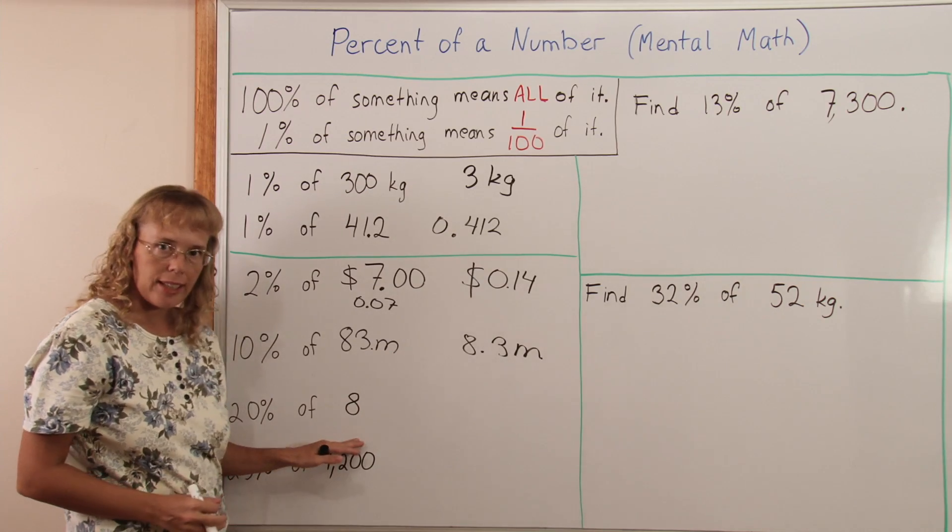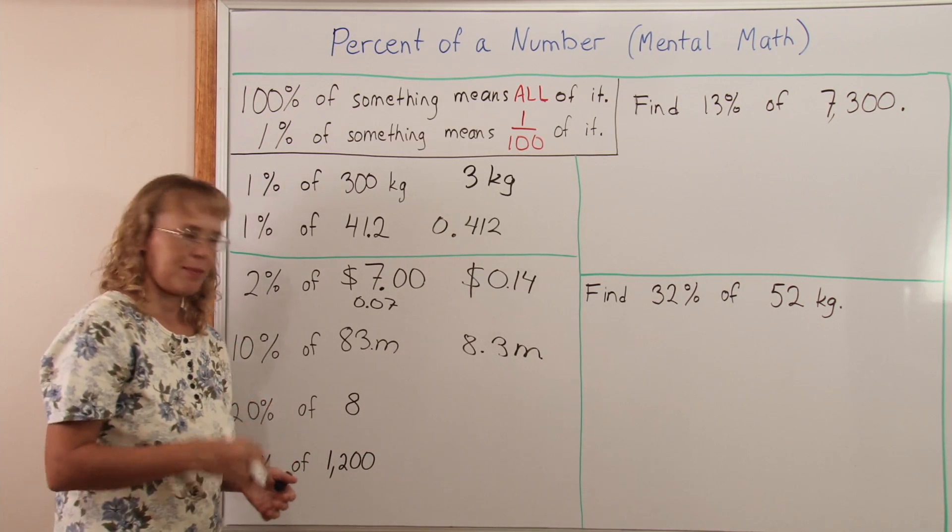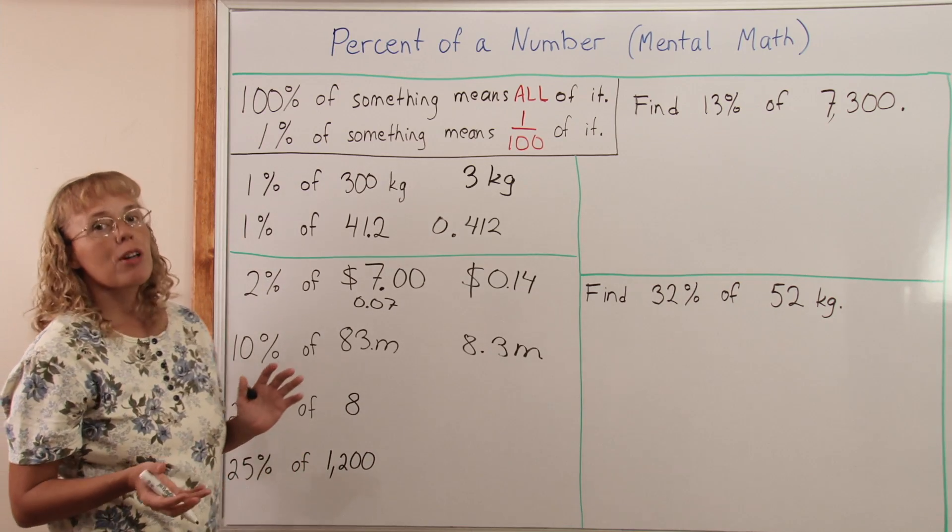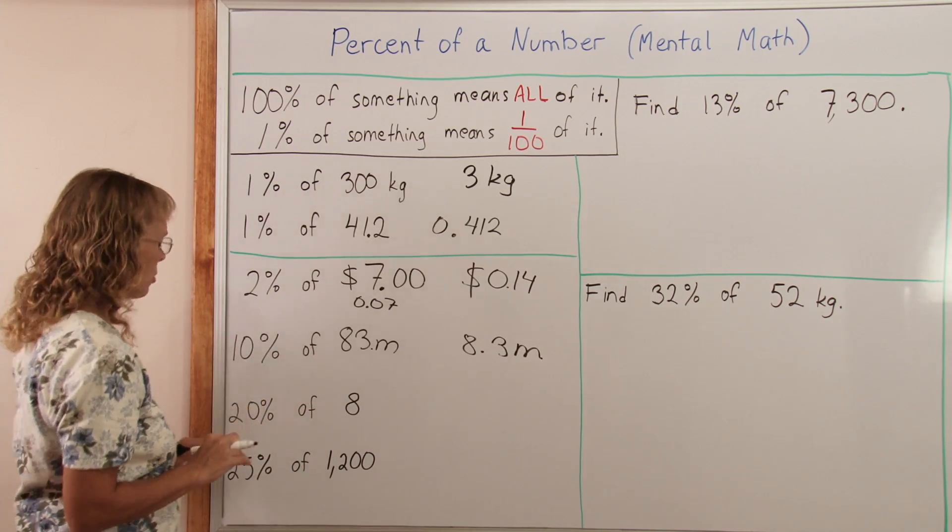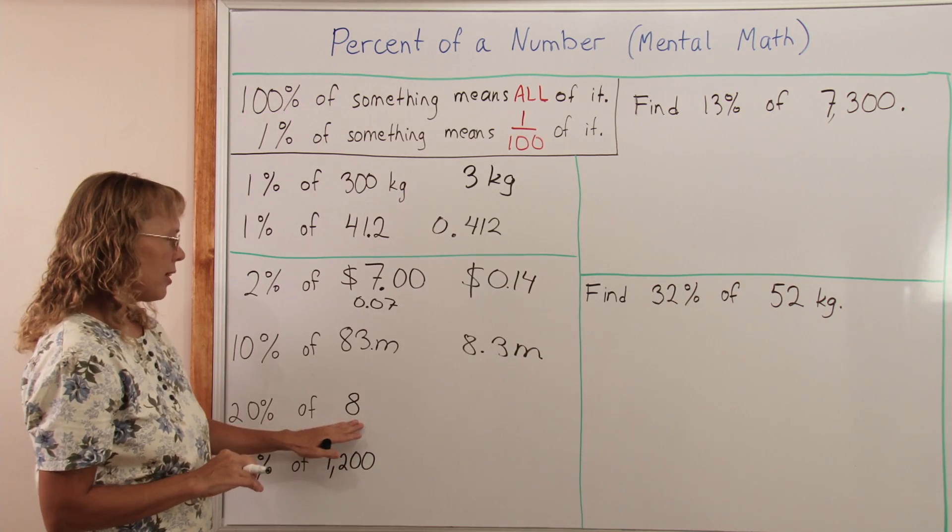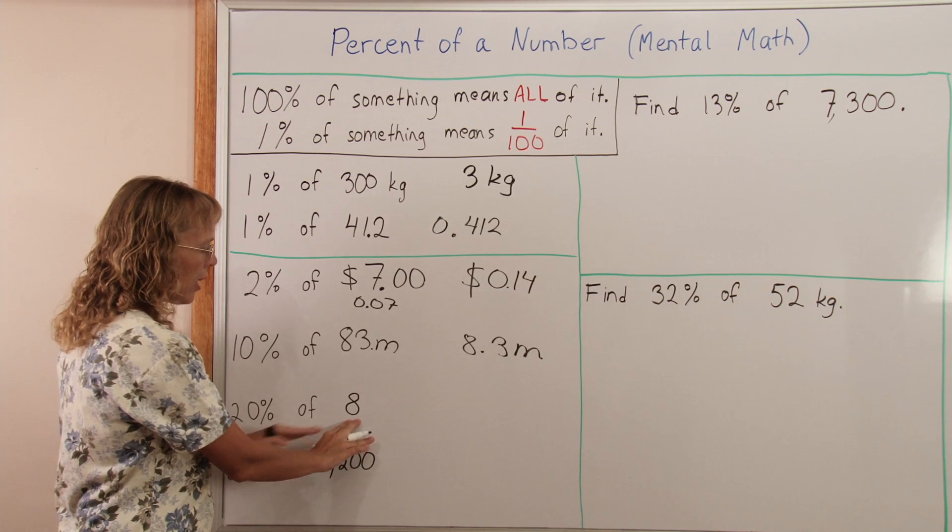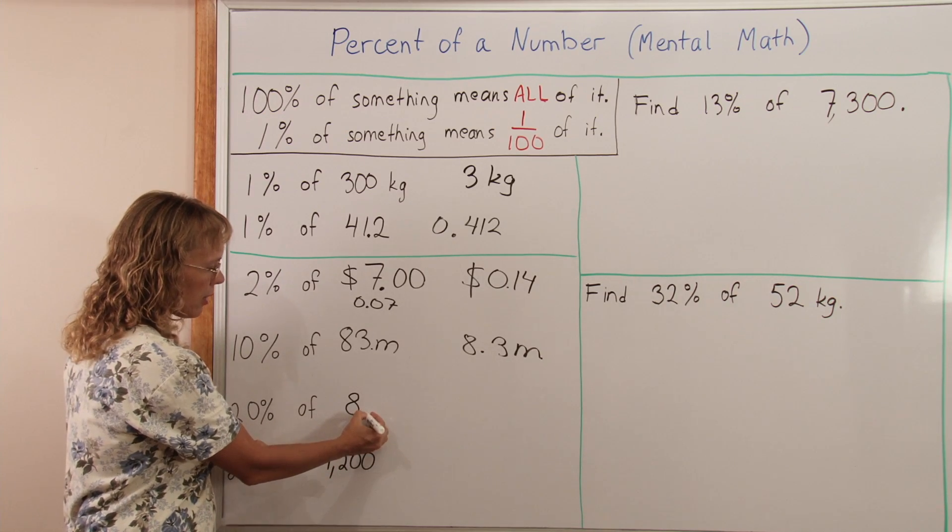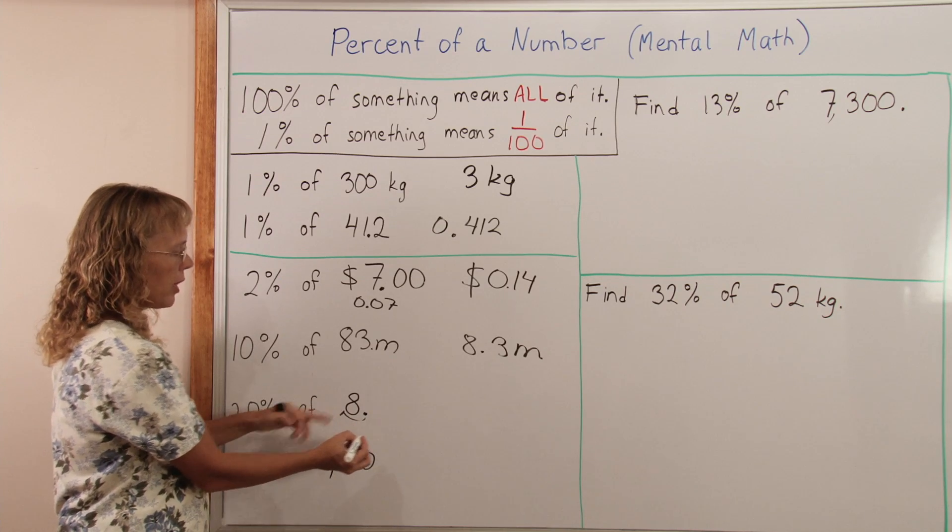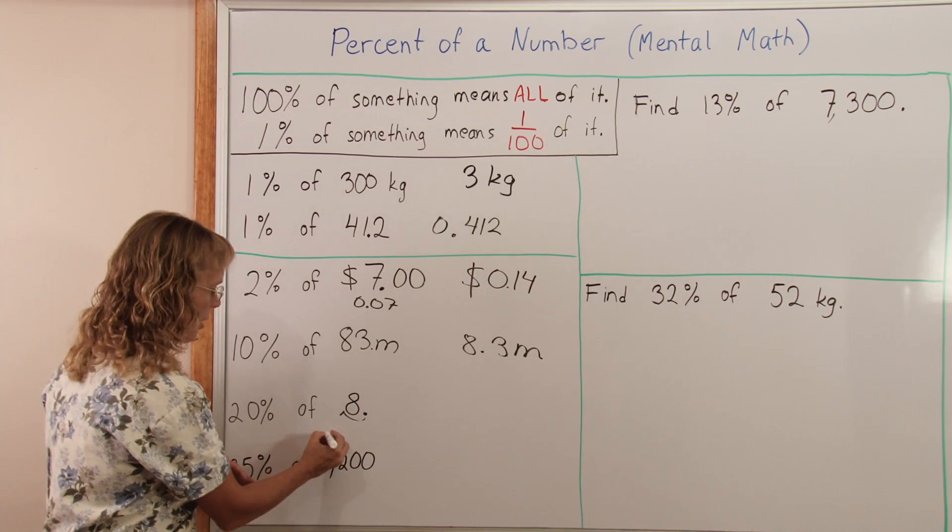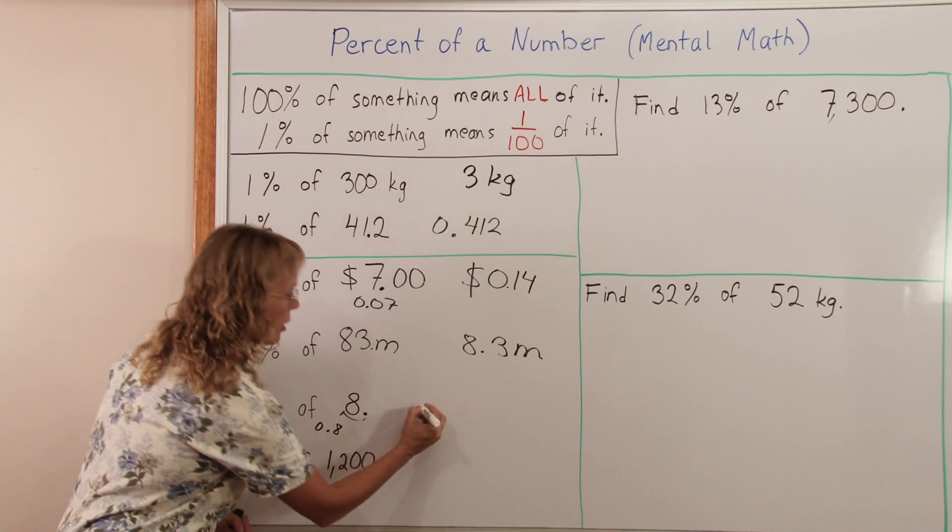20% of 8. We first find 10% and then double that. That same trick will work for finding 30%, 40%, 70%, any of those. First find 10% of 8 by dividing by 10. Think of it as here being a decimal point. It moves here, so you get 0.8. That's the 10%. But double that is 1.6.